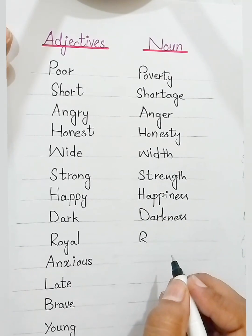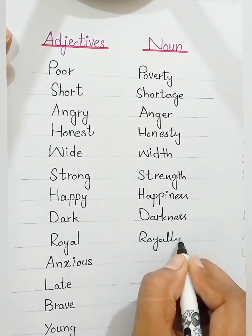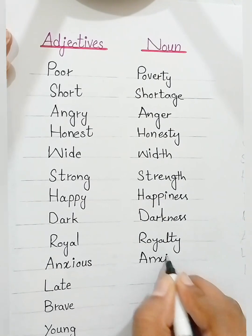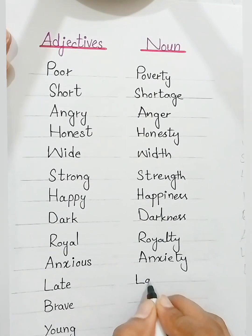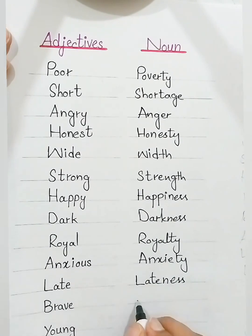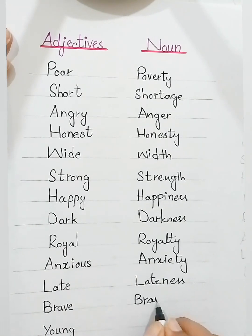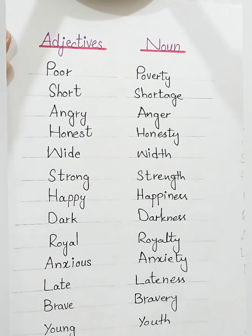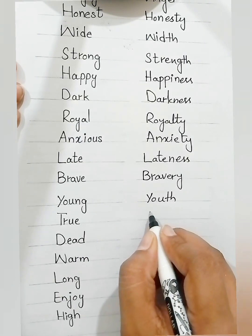Dark, darkness. Royal, royalty. Anxious, anxiety. Late, lateness. Brave, bravery. Young, youth. True, truth.